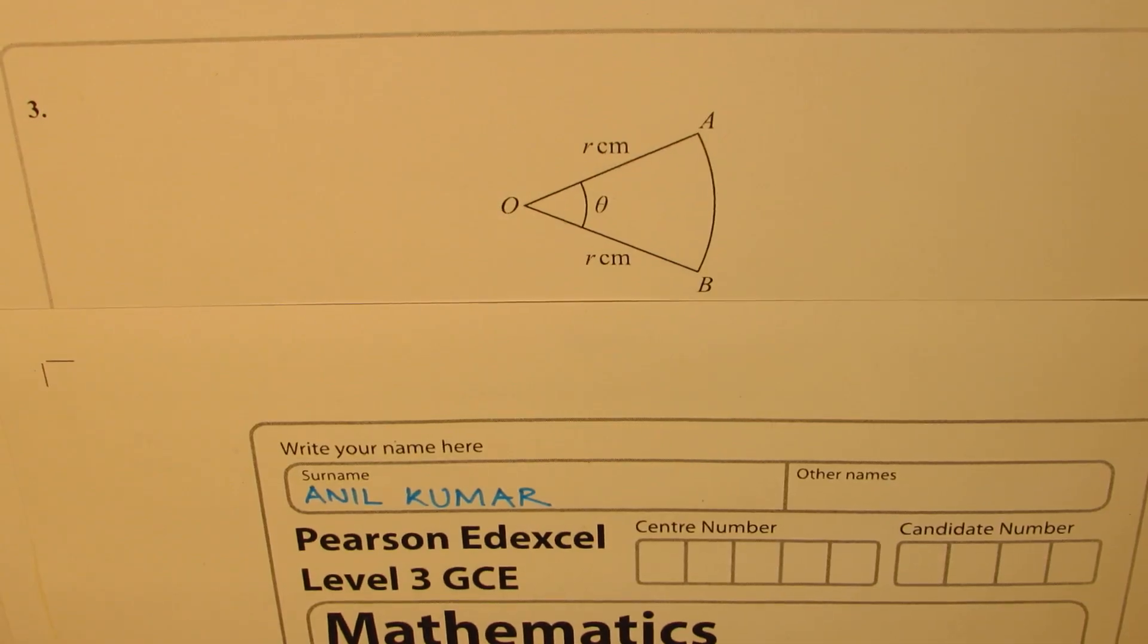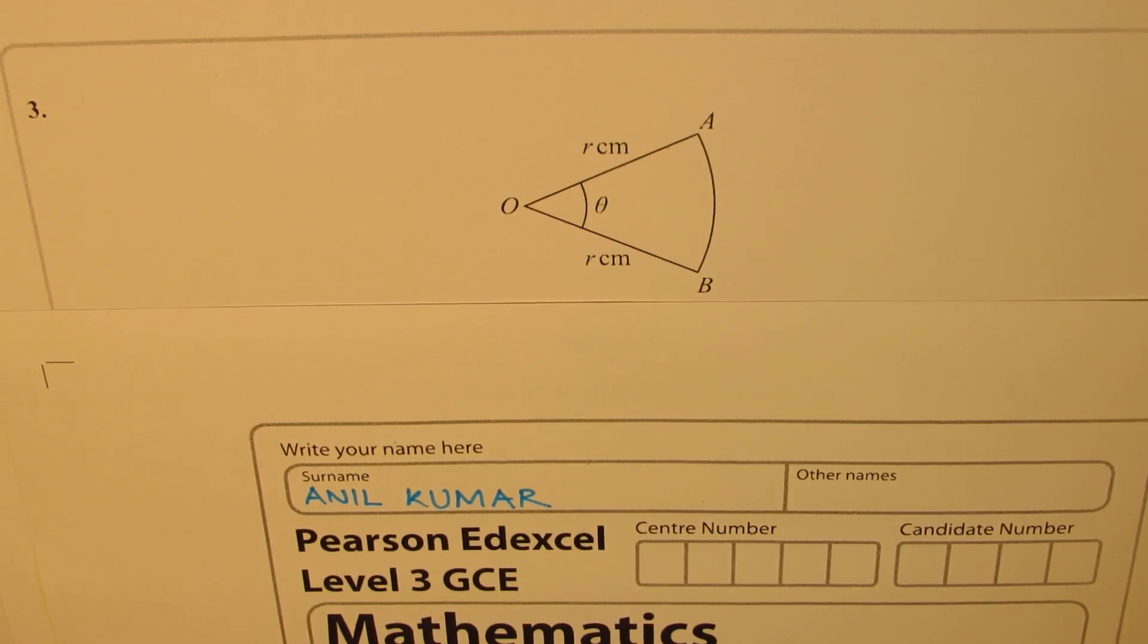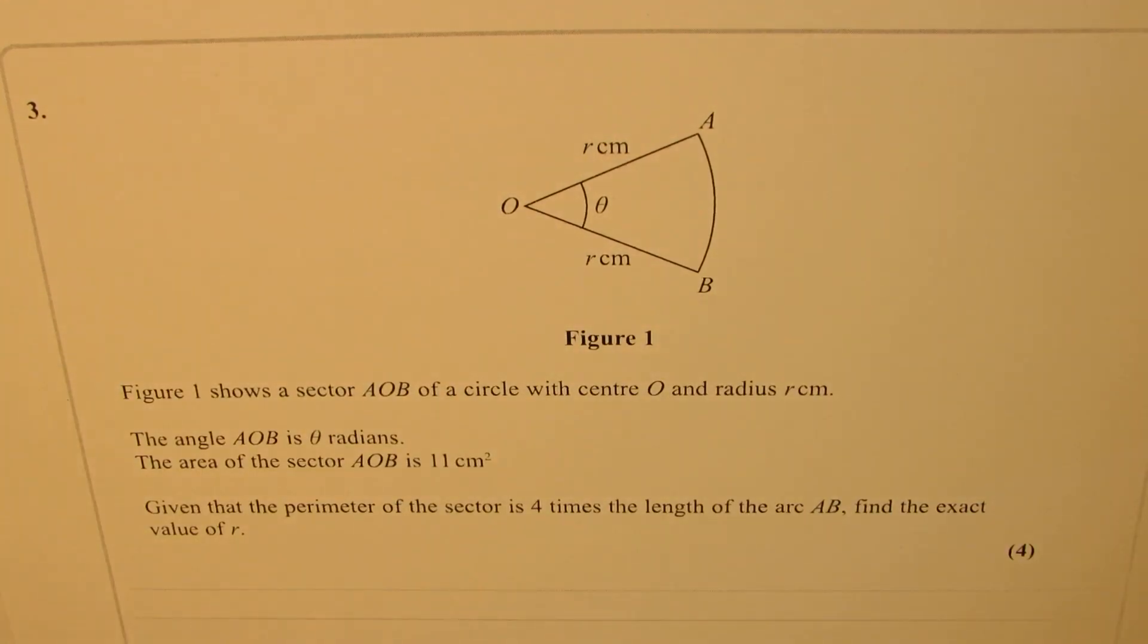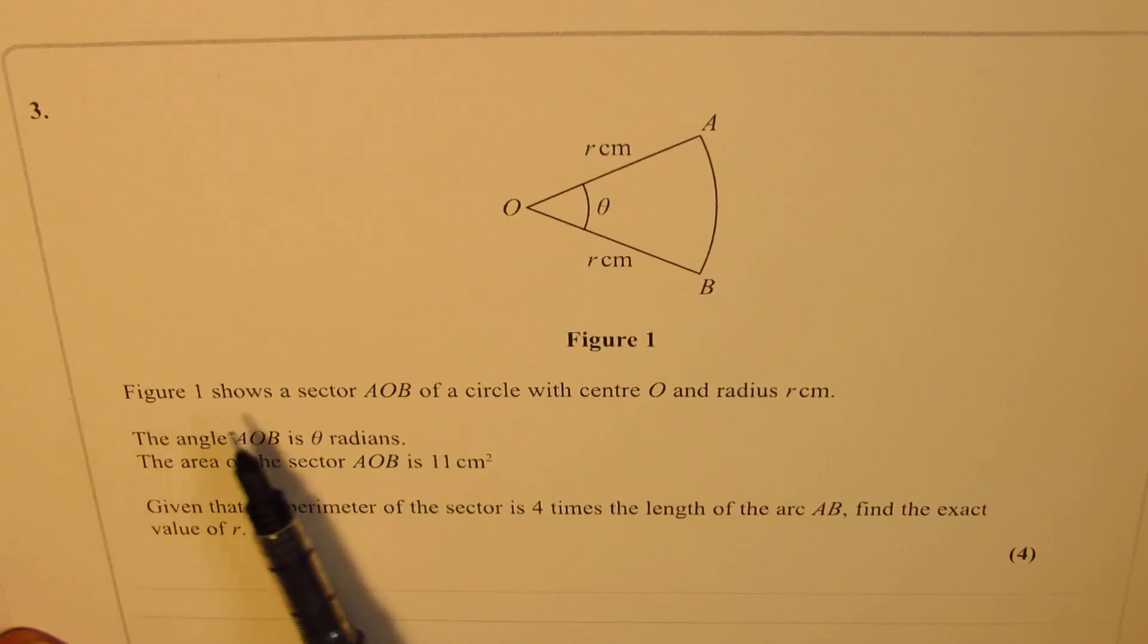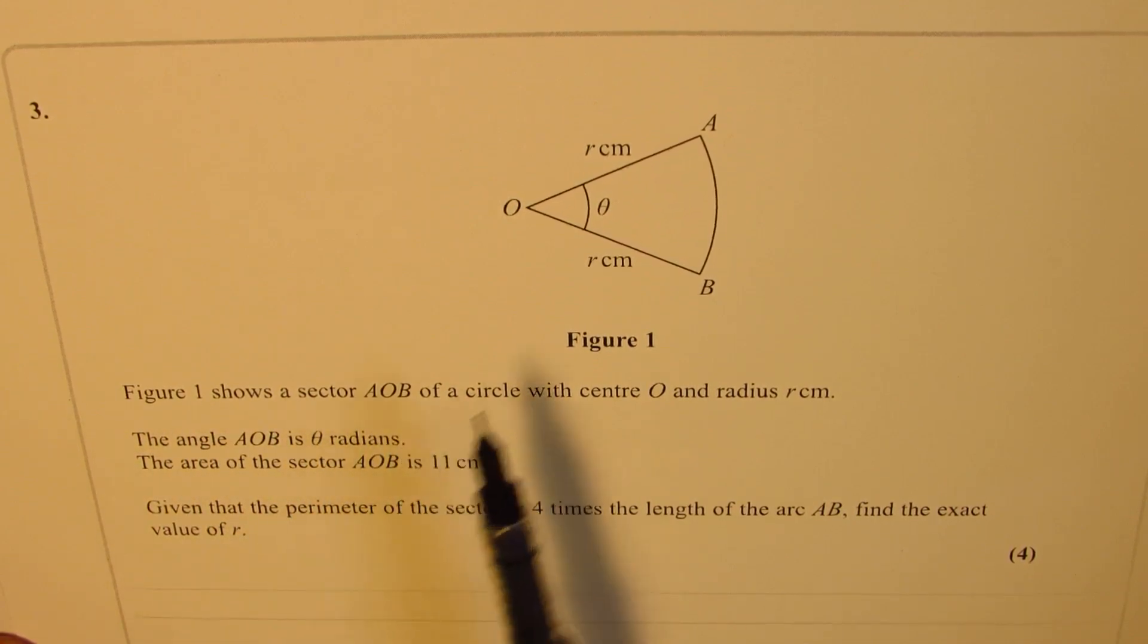I'm Anil Kumar sharing with you solutions of questions from GCE advanced level mathematics. Here is question number three. This question is based on sector area and perimeter. The question here is figure one shows a sector AOB